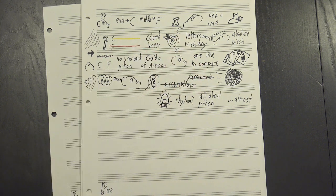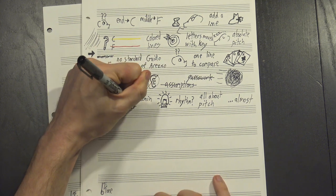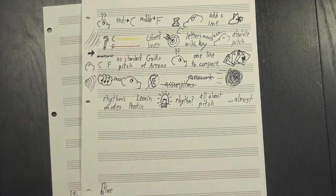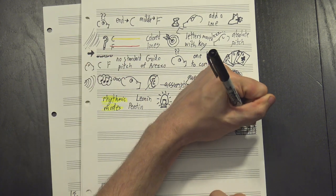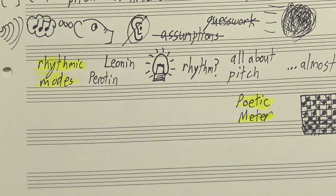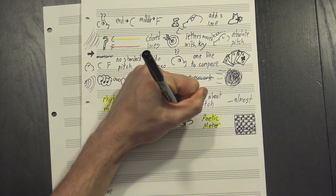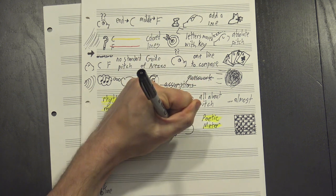The first real innovations on that front are often attributed to the composers Leonine and Paratine, who developed what are called rhythmic modes. These were predefined patterns that notes could fall into, much like metrical feet in poetry, which we've covered before. A note's length was determined by where it fell in one of these patterns.